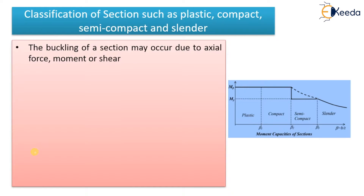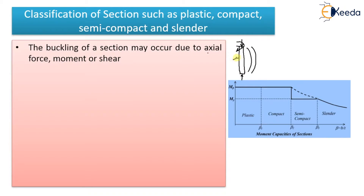Before starting the classification, let me tell you some theory. The buckling of a section may occur due to axial force, moment, or shear — this concept you should remember. For example, if you have a slender column here, the buckling will occur either to this side or that side. This buckling happens due to axial forces, moments, and shear forces — that is, transverse forces. Because of these, there will be buckling of the section.